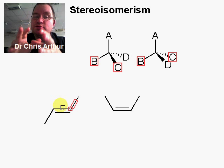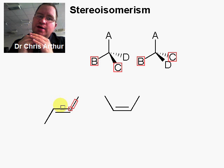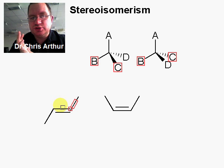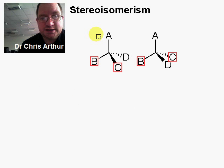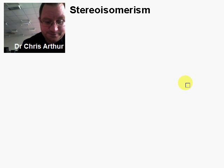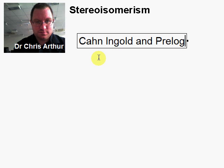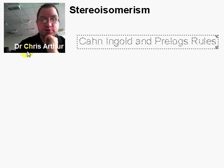Stereoisomerism is about trying to understand how this works. The way we're going to approach this is by teaching you some rules called the Cahn-Ingold-Prelog rules. What Cahn-Ingold-Prelog rules try to do is assign priorities to groups that are attached to an atom — so which group is more important than another.